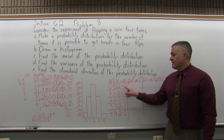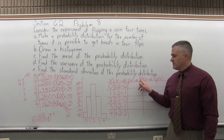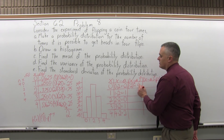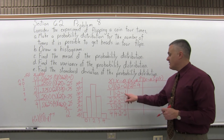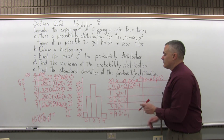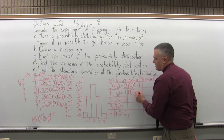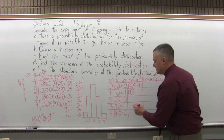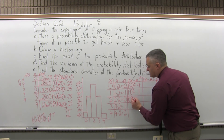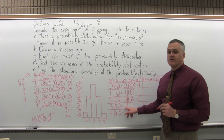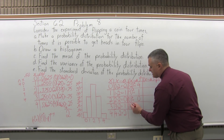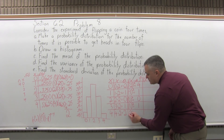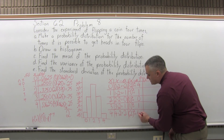The column after that, I take the x minus mu answers and raise them to the second power. Negative 2 squared: negative 2 times negative 2 gives positive 4 — the negatives cancel. Negative 1 squared: negative 1 times negative 1 is positive 1. 0 squared: 0 times 0 is 0. Positive 1 squared: 1 times 1 is 1. And 2 squared: 2 times 2 gives me 4.